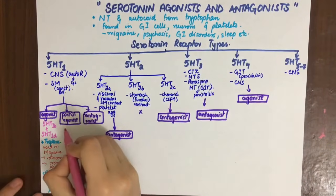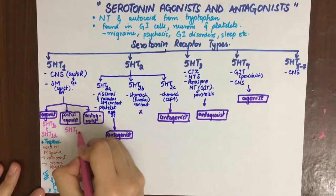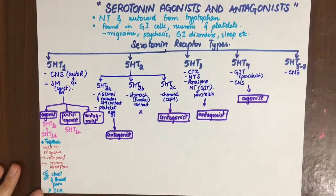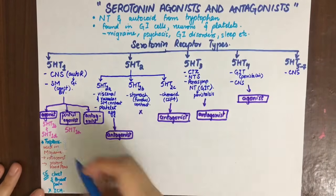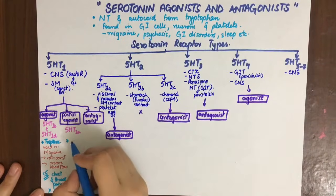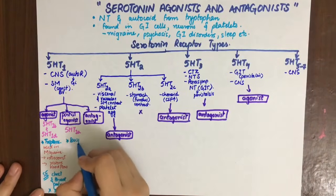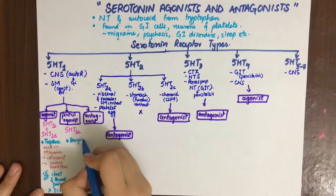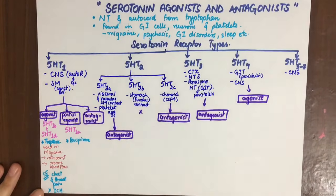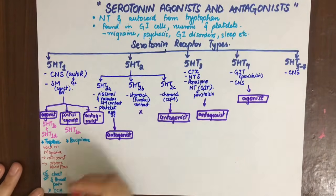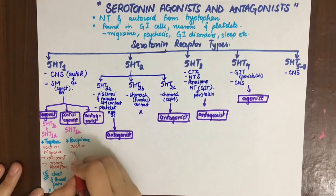The partial agonists act on 5-HT1A receptors. The major drug here is buspirone. It is used as an anti-anxiety agent — since it acts on 5-HT1A, remember 'A' for anxiety.